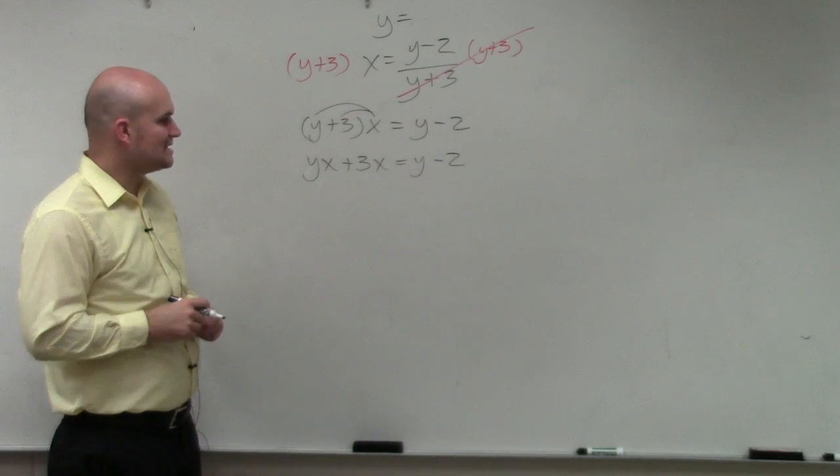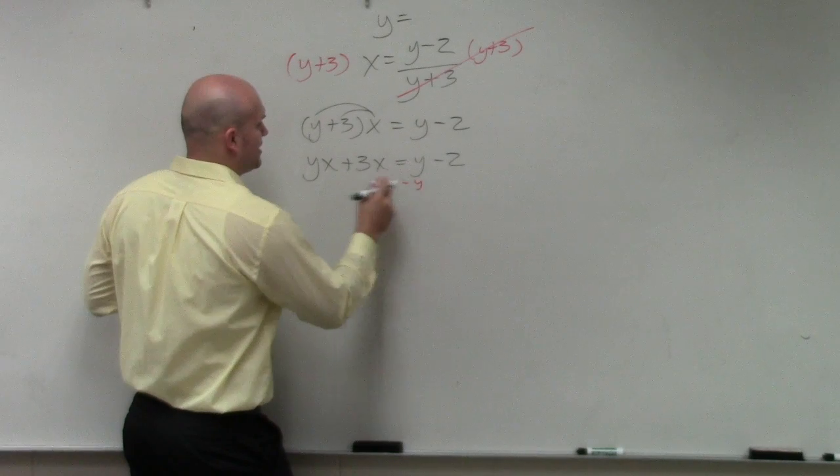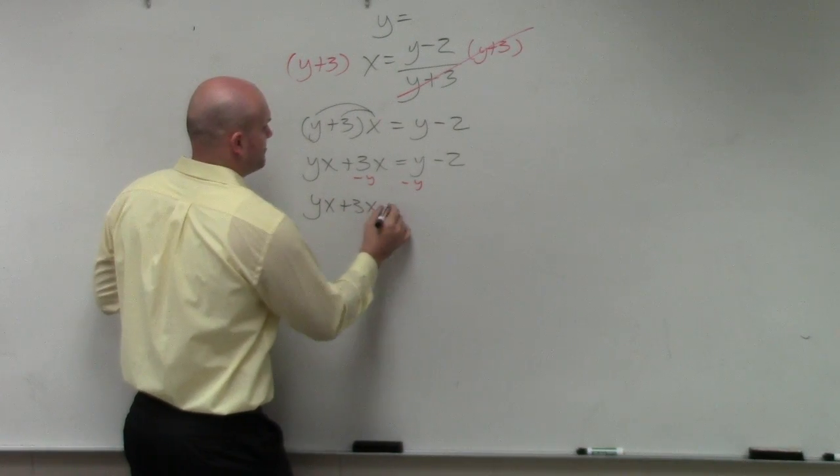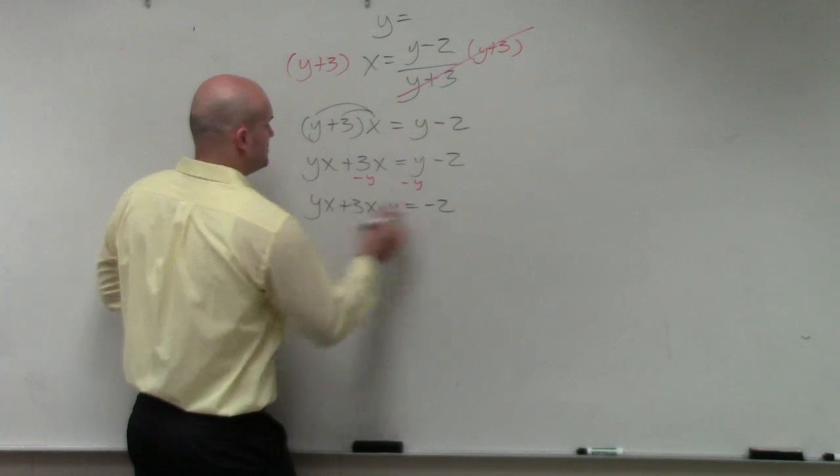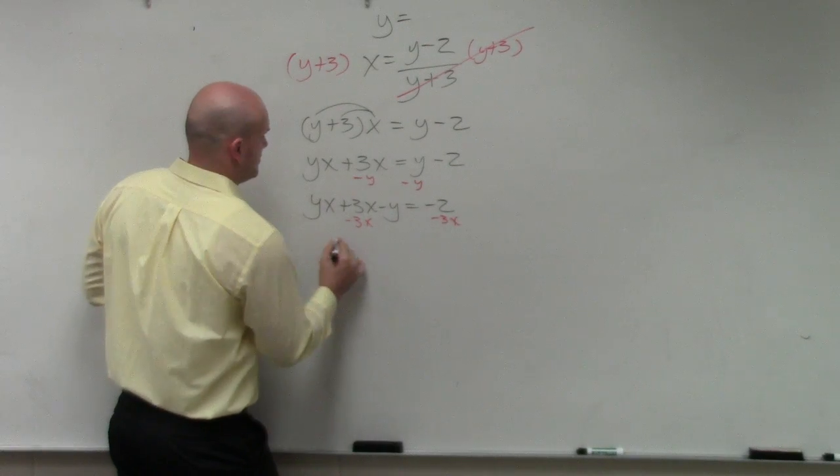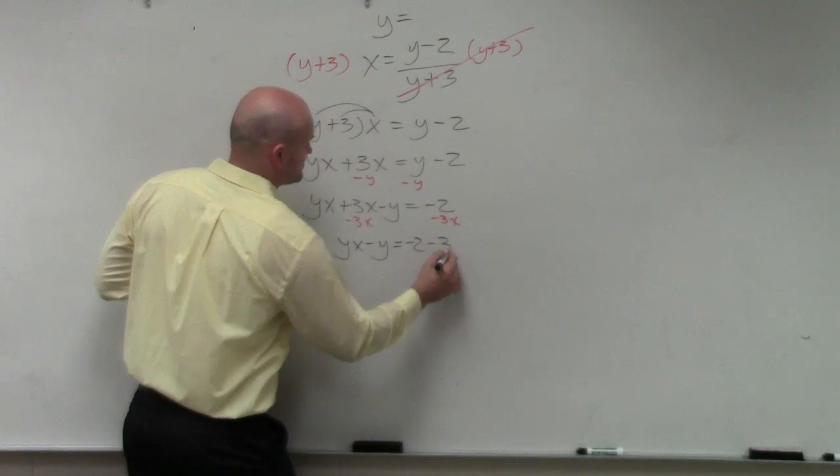Let's get the y's on the same side. In this case, I'll solve on the left side. So I'll subtract a y from both sides. yx plus 3x minus y equals negative 2. Now get rid of this 3x. yx minus y equals negative 2 minus 3x.